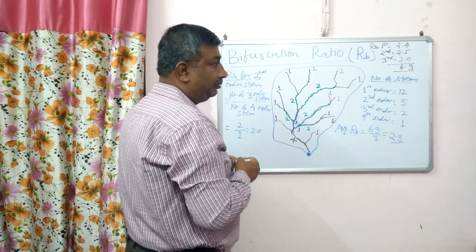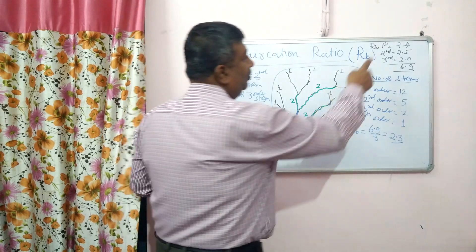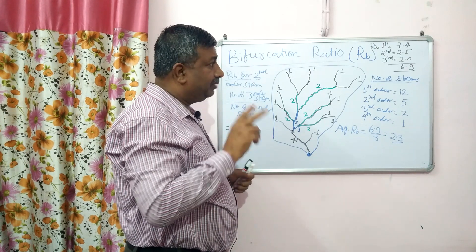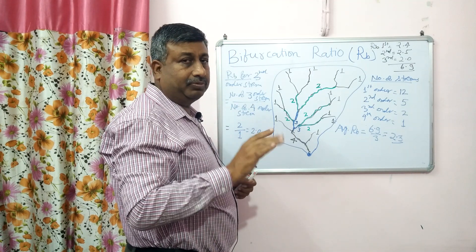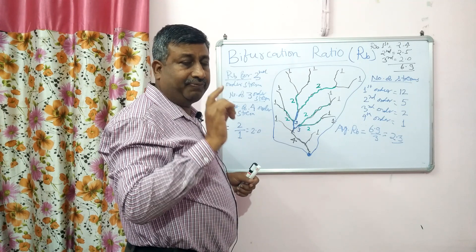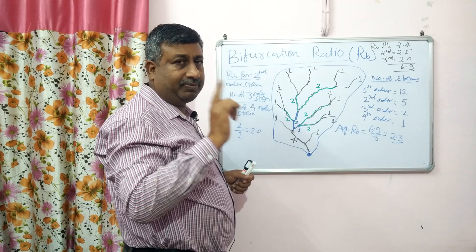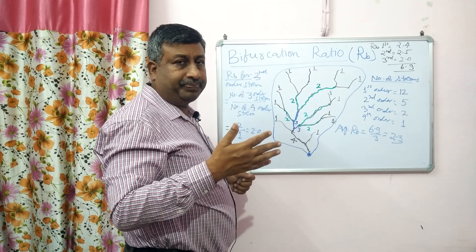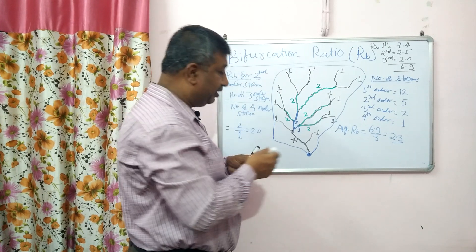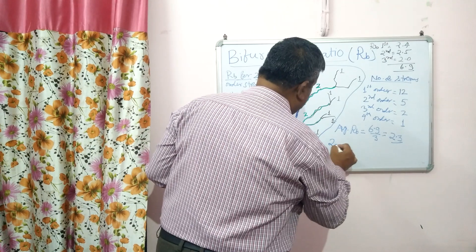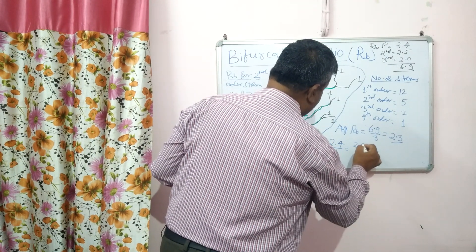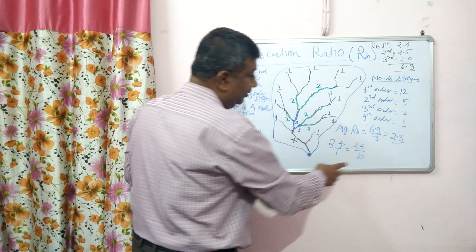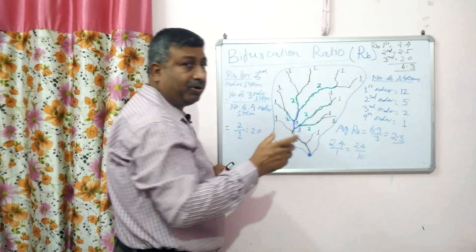The meaning of Rb = 2.4 for first order is that there is branching 2.4 times, which can be written as 24 upon 10 — meaning 24 first order streams make 10 second order streams. So 10 second order streams are formed when 24 first order streams join together.